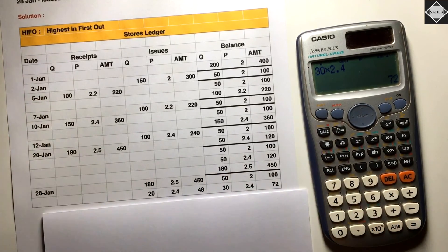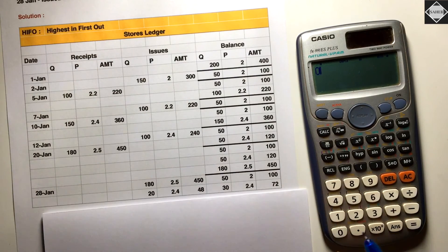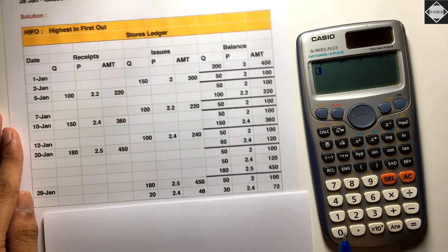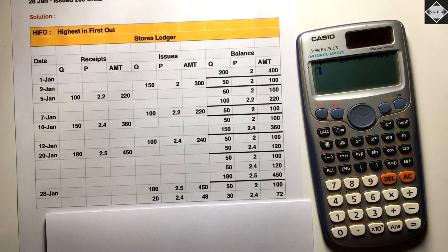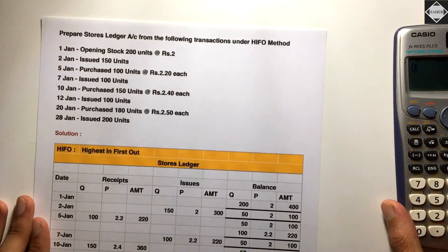That's HIFO. Whenever there is an issue, check which lot has the highest price and issue from there. Sometimes you may need to use two or three lots, as we saw with 200 units — we took 180 from the ₹2.50 lot and then 20 from the ₹2.40 lot. We are not looking at what came in first or last — only the prices, moving from high to low. If you have any doubts, comment below or message on Instagram. See you in the next video!